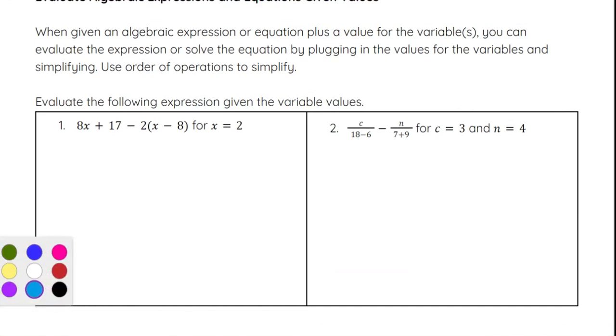Let's try number one. We have 8x plus 17 minus 2 times (x minus 8) for x equals 2. They want us to evaluate this expression given that x is equal to 2. We will plug 2 in anywhere there's an x. So right here we'll put a 2 and right here we'll put a 2. So 8x will be 8 times 2 plus 17 minus 2 times (2 minus 8) in the parentheses.